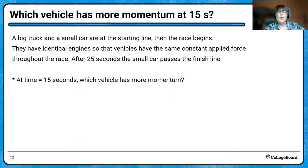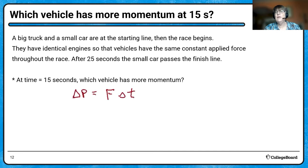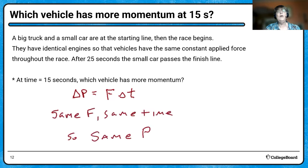Let's look at which vehicle has more momentum in the middle of the race. The change in momentum starts at zero because neither is moving, but they have the same force applied and the same amount of time has elapsed. So that means they would have the same momentum.